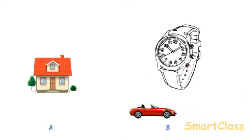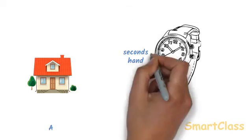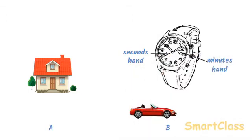For example, if we see a wrist watch, it has a seconds hand, minutes hand and hour hand. Now, the seconds hand moves quickly so we can observe the movement of seconds hand easily. We will have to keep observing the position of minutes hand and hours hand for quite some time to find out their movement.